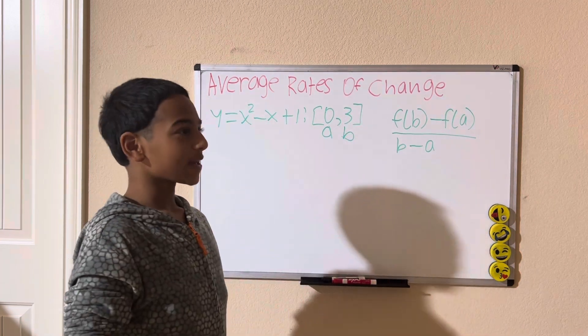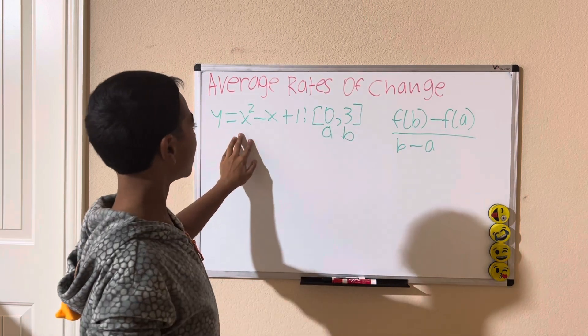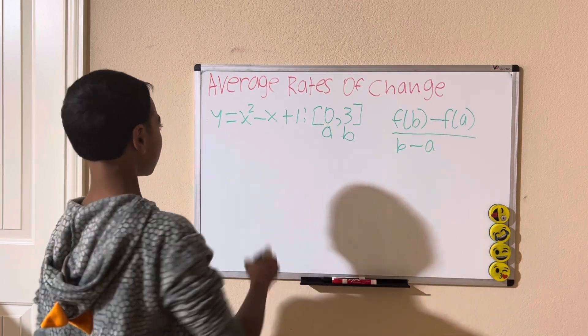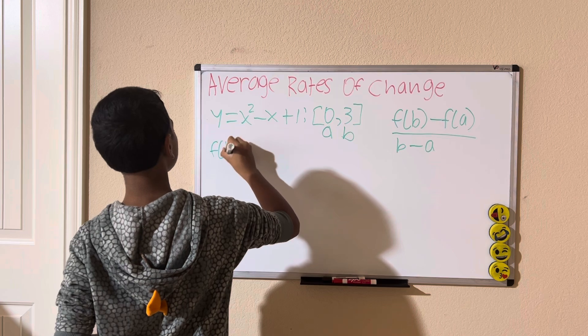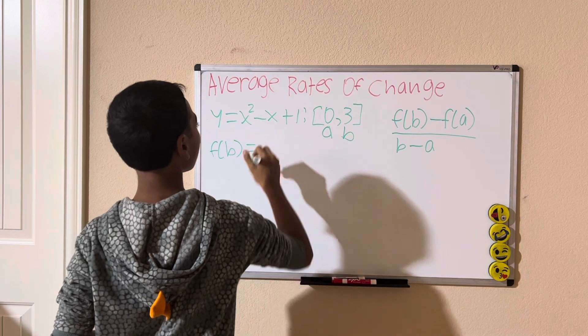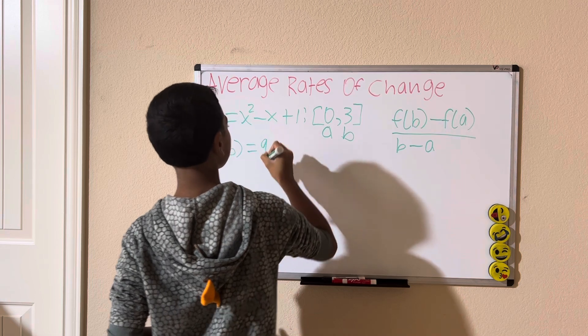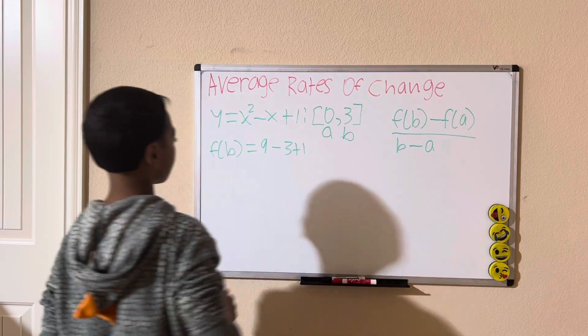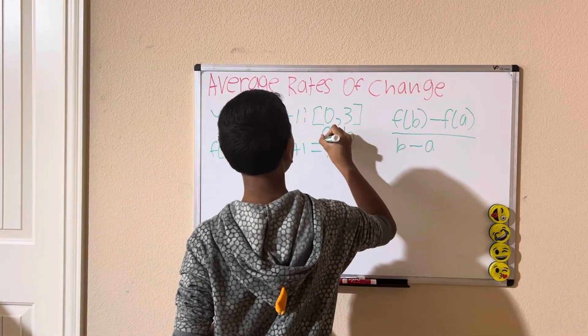There's a difference between f of b and b. b is 3, but f of b, you plug that into the equation, and that's f of b. So, let's do f of b first. f of b equals 3 squared, which is 9, minus 3, plus 1, which gives you 7. So, f of b equals 7.